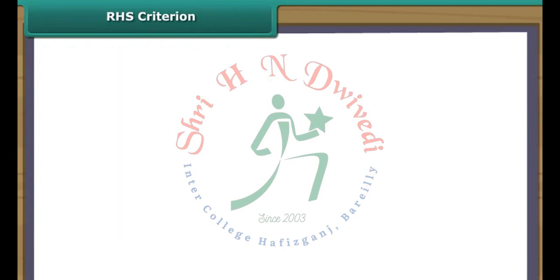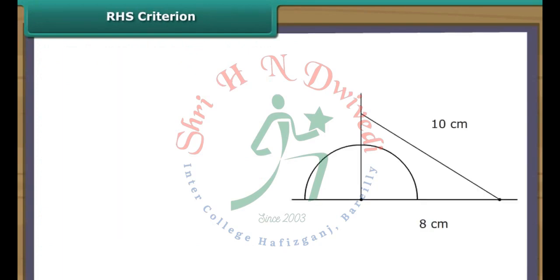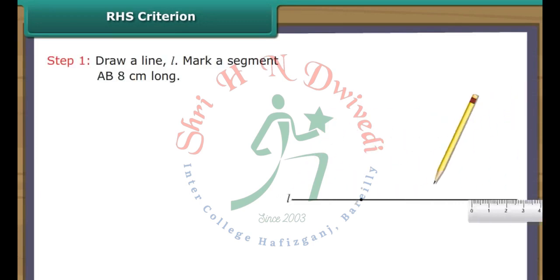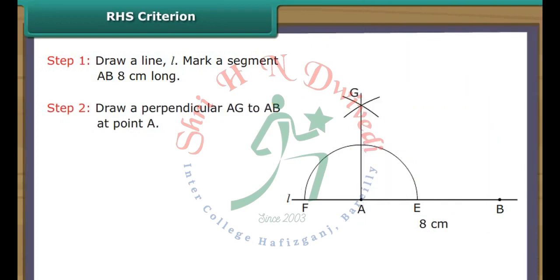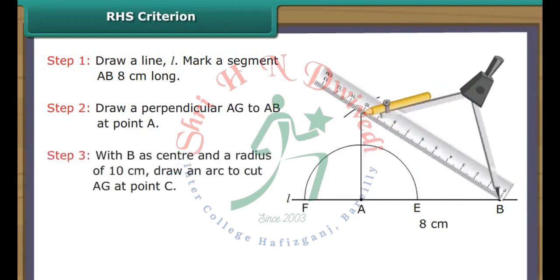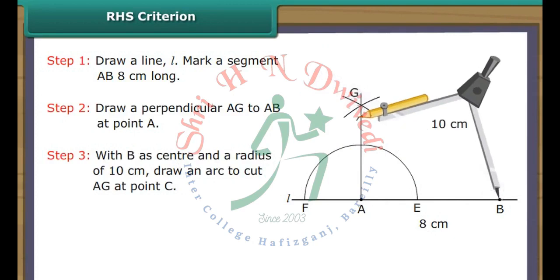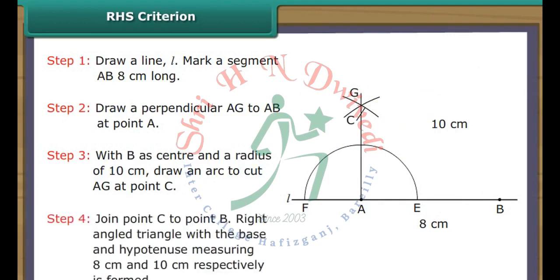RHS Criterion. Let us now draw a triangle, one of whose angles measures 90 degrees and the base and hypotenuse are 8 cm and 10 cm respectively. Draw a line L and mark a segment AB 8 cm long. Draw a perpendicular AG to AB at point A. With B as center and a radius of 10 cm, draw an arc to cut AG at point C. Join point C to point B. A right angled triangle with base and hypotenuse measuring 8 cm and 10 cm respectively is formed.